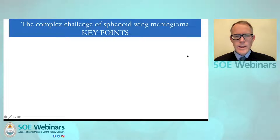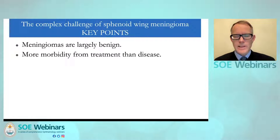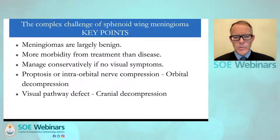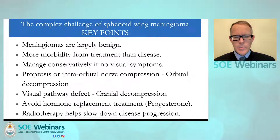In summary, the key points for sphenoid wing meningiomas: meningiomas are largely benign and more morbidity tends to occur from treatment than from the disease itself. Where there are no visual symptoms, manage conservatively. Where there is major proptosis or intraorbital nerve compression, consider orbital decompression — either lateral or medial — and that decision is itself a challenge. Where there is a visual pathway defect with compression posterior to the orbit, patients may require cranial decompression or radiotherapy. Always avoid progesterone treatment, as this drives the evolution of meningiomas. Radiotherapy helps to slow disease progression, and its role and timing in management is still being understood.